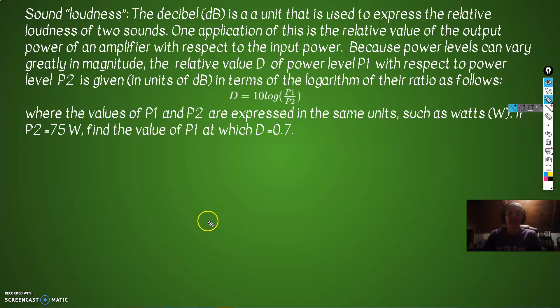All right, let's look at our last one. This has to do with sound and decibel levels. So the decibel (dB) is a unit that is used to express the relative loudness of two sounds. One application of this is the relative value of the output power of an amplifier with respect to the input power. Because power levels can vary greatly in magnitude, the relative value D of power level P1 with respect to power level P2 is given in units of decibels in terms of the logarithm of their ratio as follows: D = 10 log(P1/P2), where the values of P1 and P2 are expressed in the same units, such as watts. If P2 equals 75 watts, find the value of P1 at which D is equal to 0.7.